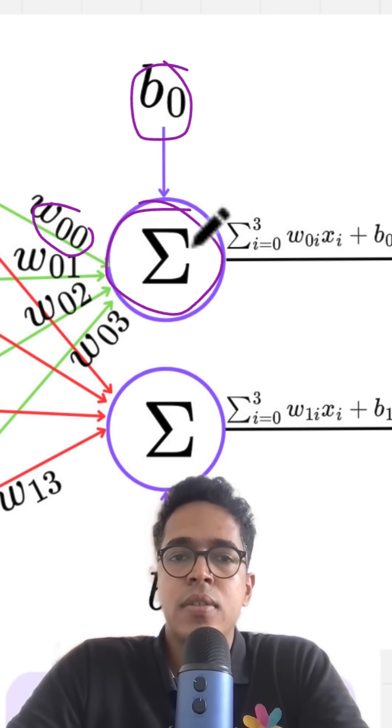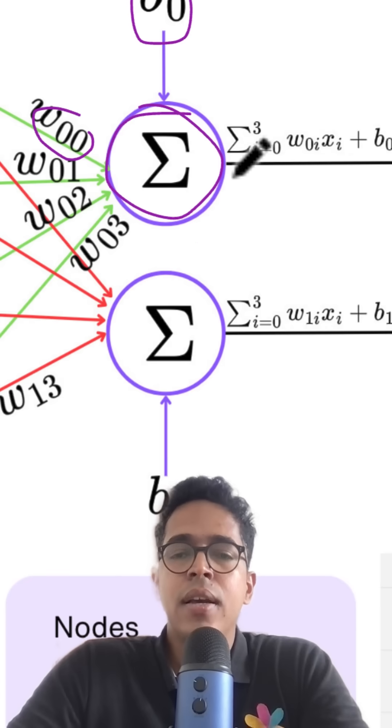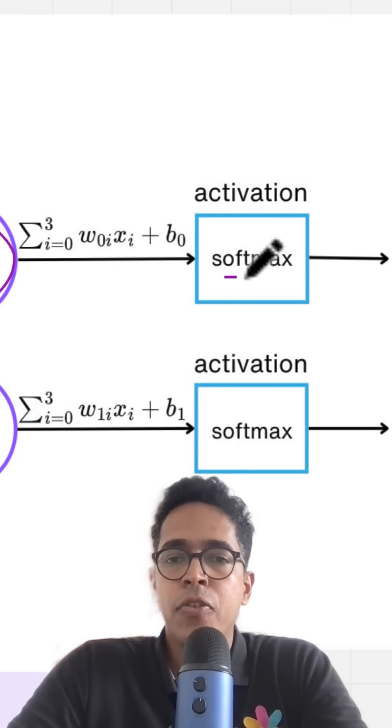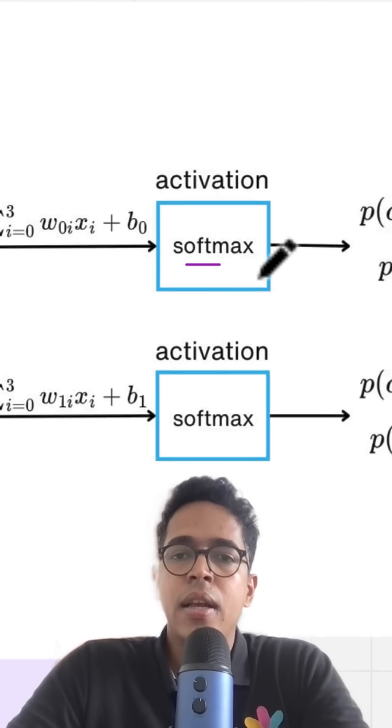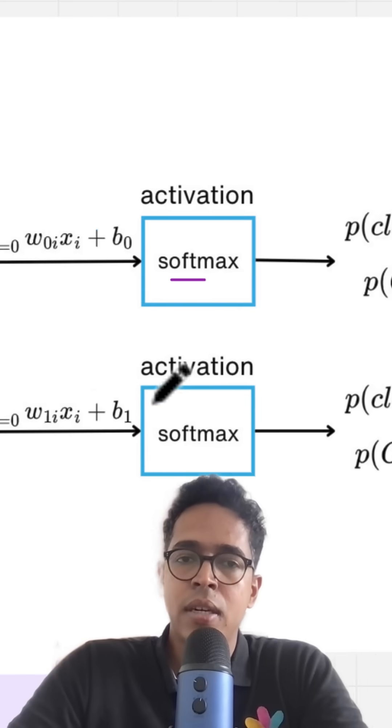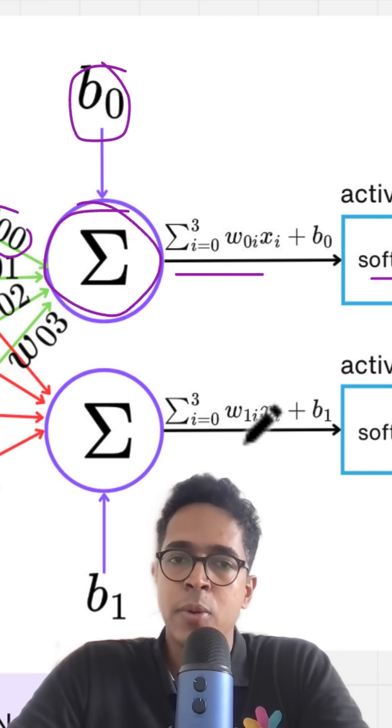Now, the output from these nodes, which in this case is an output layer, is activated using a softmax or any other activation function. In this case, the softmax activation function converts the output from these nodes into probability distributions.